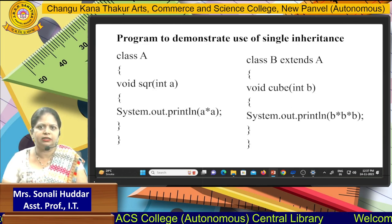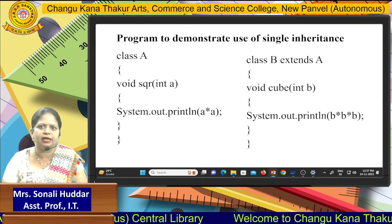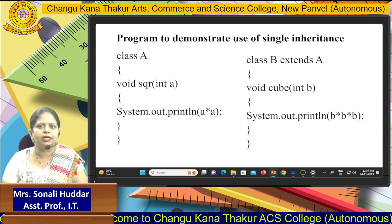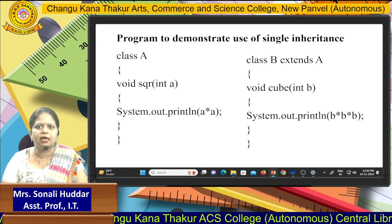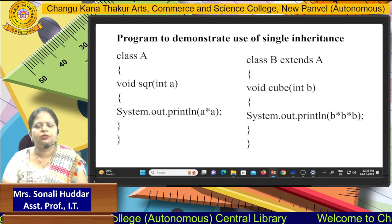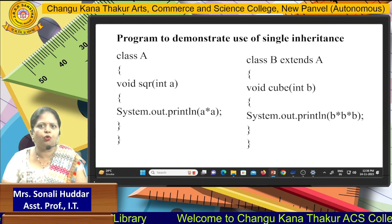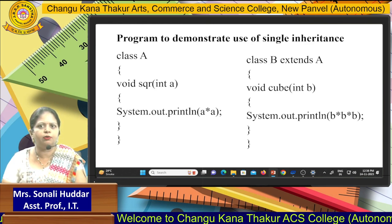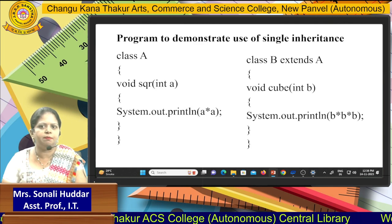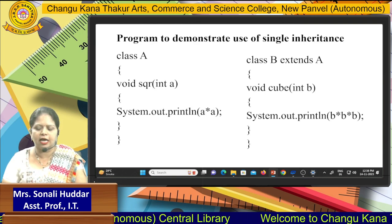Now I am creating another class which works as a child class of class A. Class A works as the parent class and class B works as the child class. To create a child class we use the extends keyword — class B extends A. Now inside class B, I define void cube int B, and I calculate the cube as B into B into B using System.out.println. Then closing the cube method and closing class B.